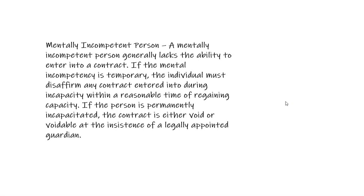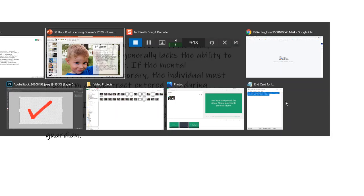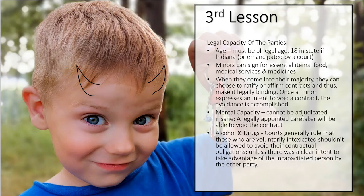Going back to mental incompetence: if a person is mentally incompetent, they generally lack the ability to enter into a contract. If it's temporary — like bipolar or some stress-related condition — they could reaffirm that contract once they regain the capacity to understand, or they could disaffirm it. If they are permanently incapacitated — adjudicated insane and permanently deemed incapable of understanding — they can never sign a contract. It would be void from the outset, or a legal guardian could void it for them.